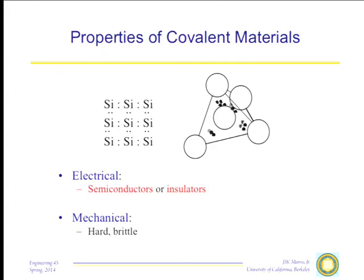Mechanically, covalently bonded materials are invariably hard and brittle. In order to mechanically deform the material, I have to move atoms with respect to one another, but this is a saturated configuration — the electron cloud isn't malleable because all electrons are fixed in states. Perturbing the configuration requires high-energy electron states, so it's very hard to deform. As a consequence, covalent materials are hard, very difficult to form, and tend to be brittle. Diamond is the hardest substance known, but it is also very brittle — if you tap it just right on a hard ceramic, you can cleave it in two.